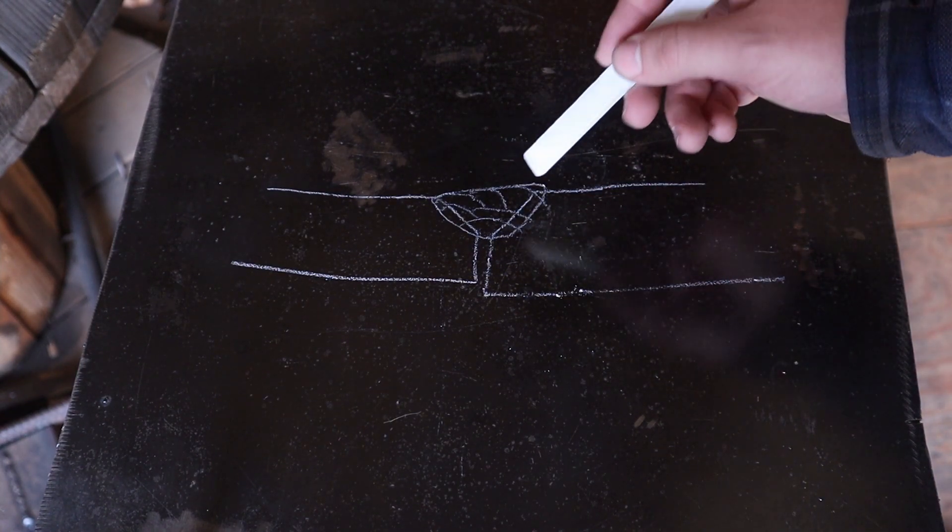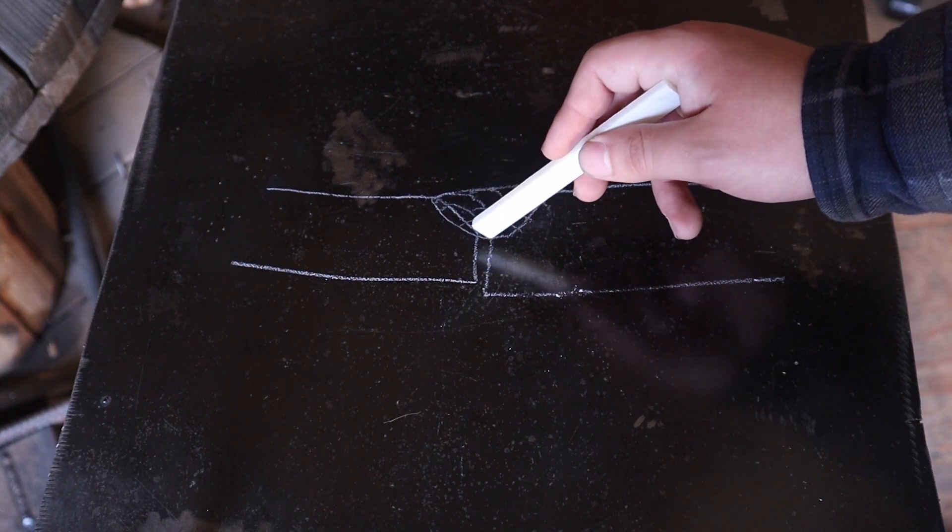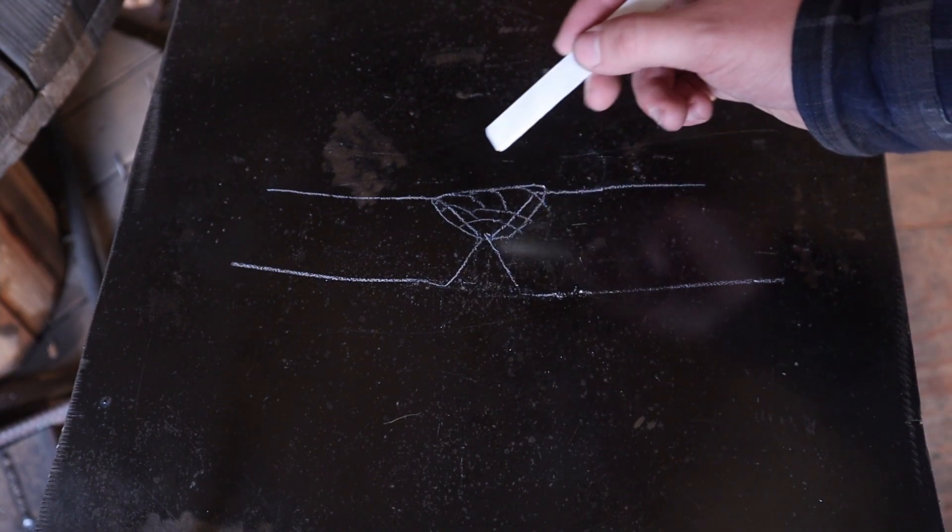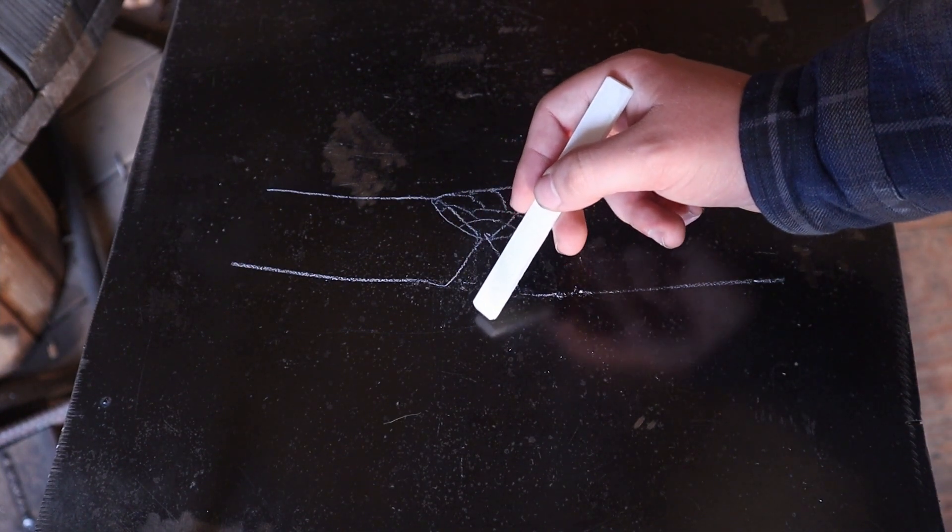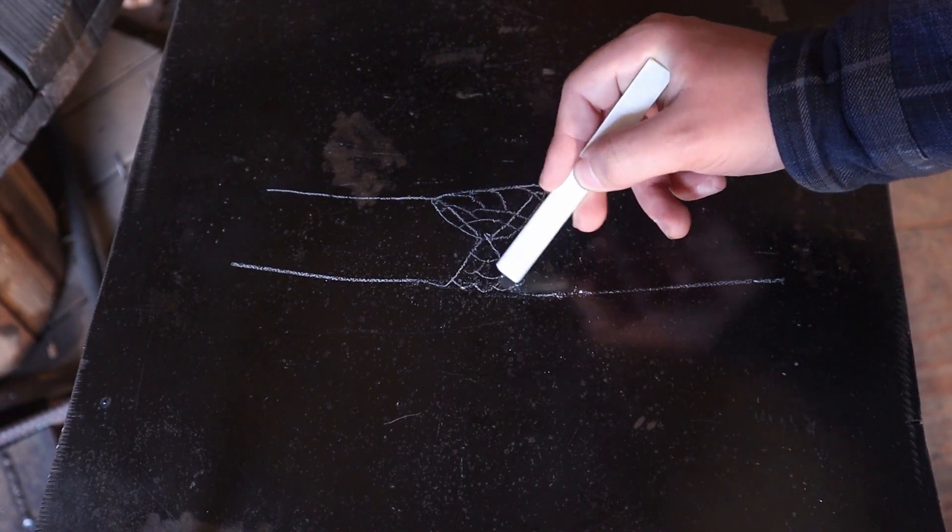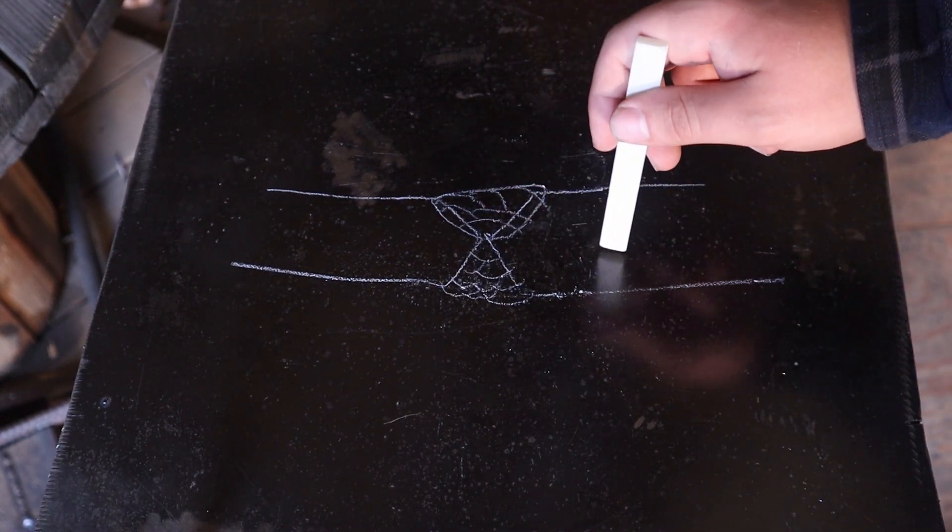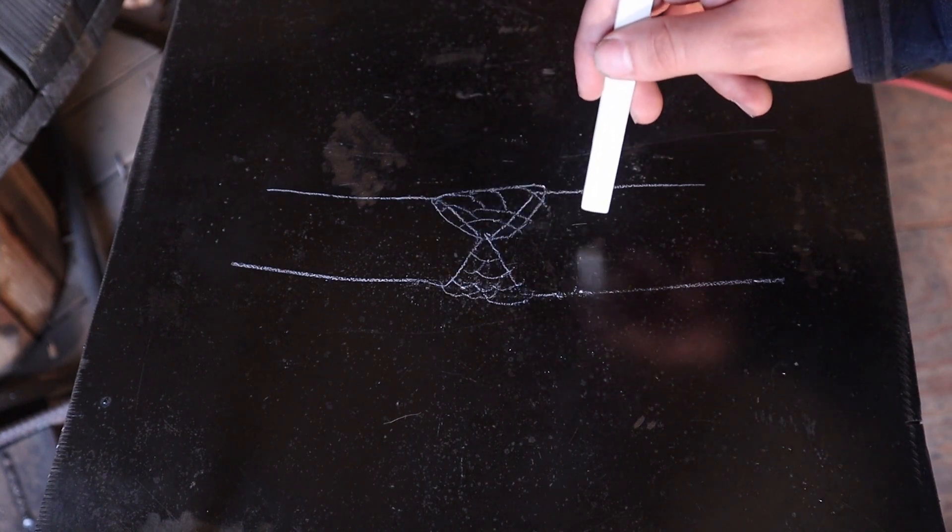Then what you do, if you're able to, is flip the piece over, grind another groove into the back side, and then remake the same weld you did on this side. And now you have two pieces of steel that are completely welded together.